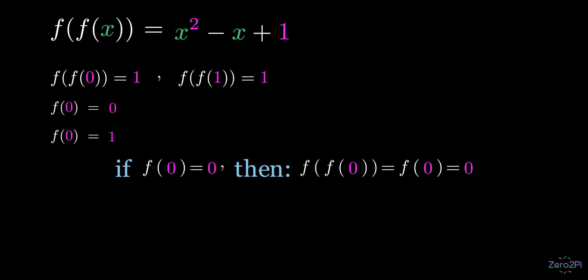So f of 0 equals 0 is impossible. That leaves us with the only valid solution, which is that f of 0 equals 1.